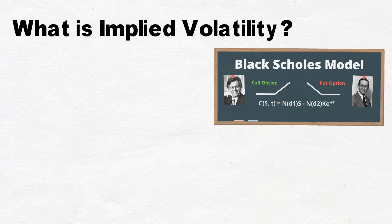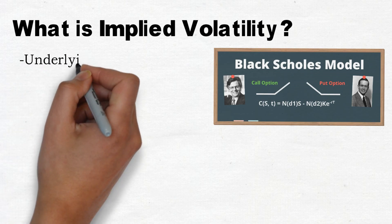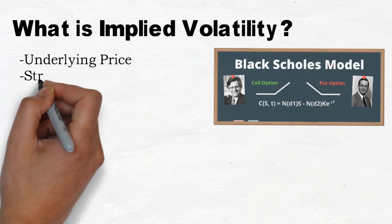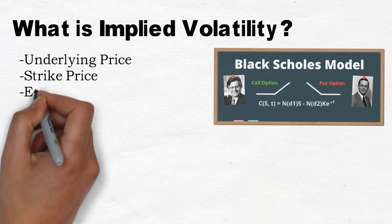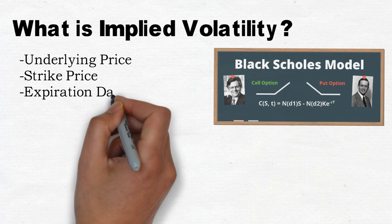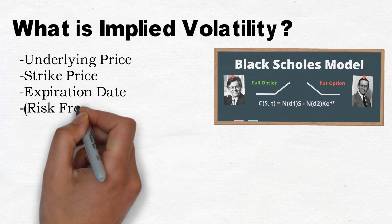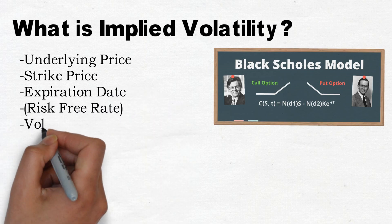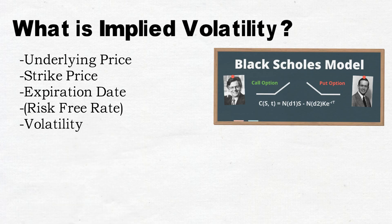To understand this, let's break down what goes into an options price. The Black-Scholes formula uses the following variables to calculate an options price: the underlying price, the strike price, the expiration date, the risk-free rate, and implied volatility.